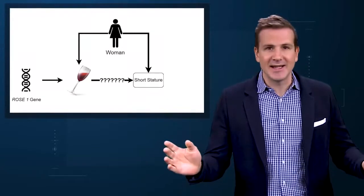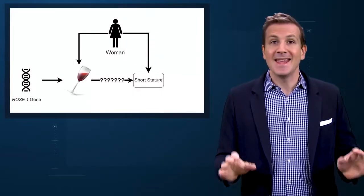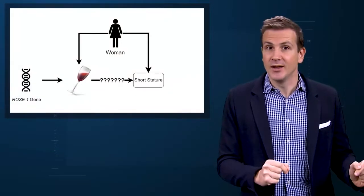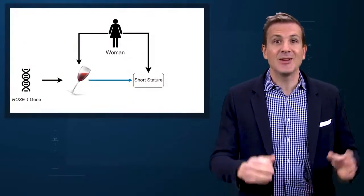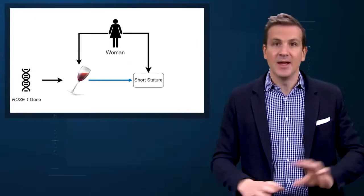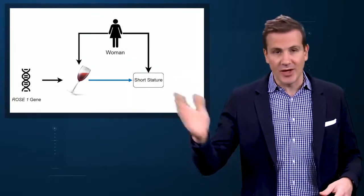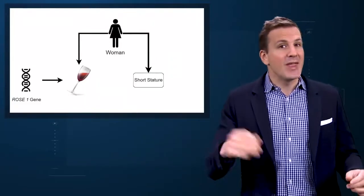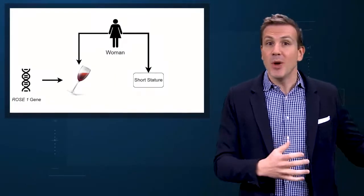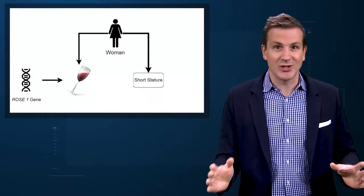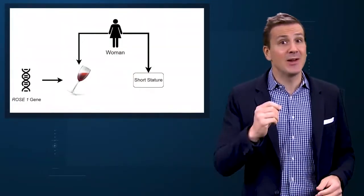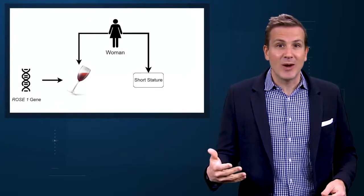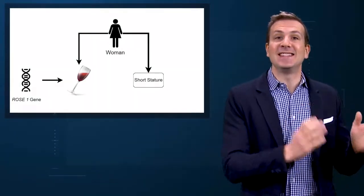Further, the gene has no plausible link to height – it doesn't code for any growth proteins or anything. If rosé really does cause short stature, people born with this gene will be shorter on average due to all that rosé they've been drinking. There is a path from the gene to stature. If, on the other hand, the observed rosé-height relationship is all due to confounding, people born with the ROSE1 gene will be no taller or shorter than the rest of us. Without a causal link between rosé drinking and stature, the gene promoting rosé drinking has no path to get to stature. That is what is so special about an instrumental variable – it allows for a decent assessment of causality. And a genetic instrumental variable is even more special – if you ever read a study referencing Mendelian randomization, this is exactly what they're talking about.